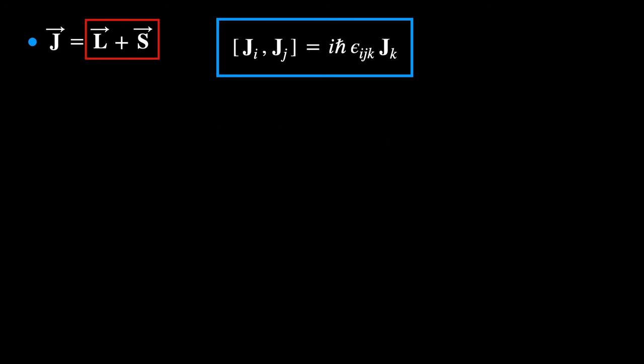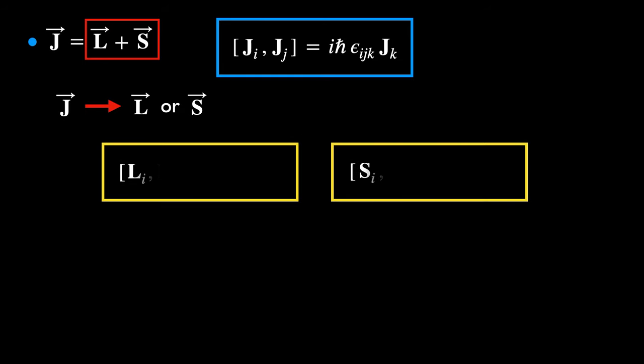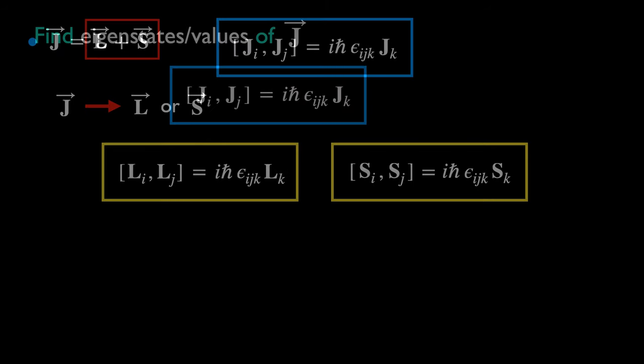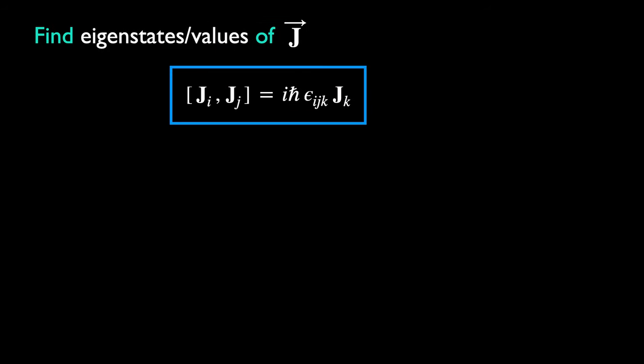Even though J is written here as the sum of L and S, it could also mean L or S, as we are just using it to represent any vector that satisfies the relation in the blue box, which both L and S do. This problem of finding eigenstates and eigenvalues is easily solved if we know how to relate it to a previous problem — that of the harmonic oscillator.